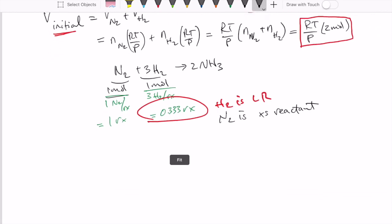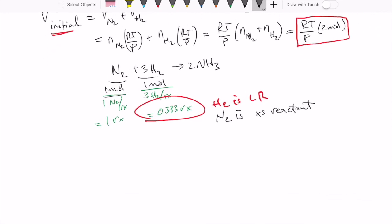Now that we know the limiting reactant, we can go ahead and calculate how much product we're going to get. So number of moles of product is just going to be one mole of H2, and then multiply that by the stoichiometric ratio between the product and the limiting reactant, which is 2 over 3. So we end up getting two thirds or 0.667 moles of NH3.